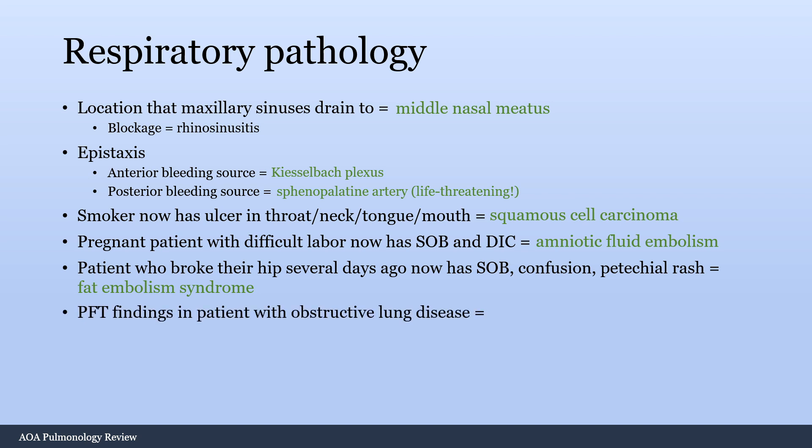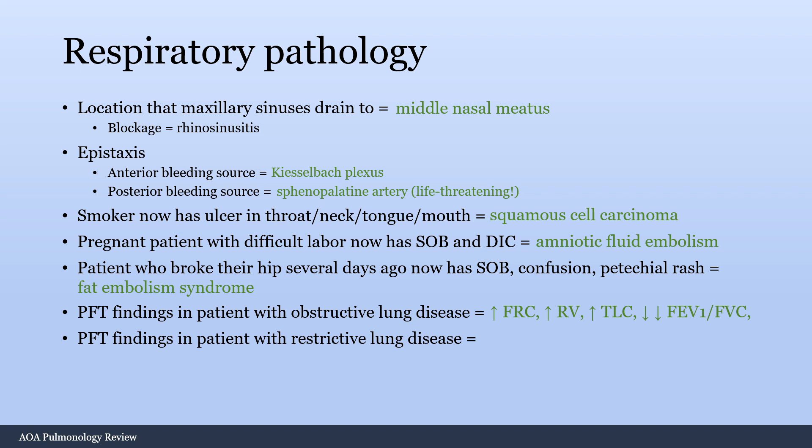PFT findings in a patient with obstructive lung disease: the main one to remember is decreased FEV1/FVC ratio, and everything else is increased — functional residual capacity increased, residual volume increased, TLC increased. PFT findings in a patient with restrictive lung disease: everything is decreased and they have a normal FEV1/FVC. Make sure you can identify those within five seconds of getting a question on your Step 1 exam.